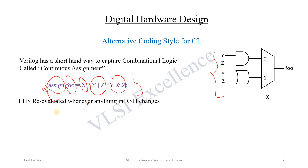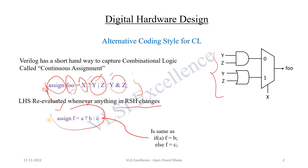The important thing to remember with continuous assignment is that the LHS is re-evaluated whenever anything in the RHS changes. So whenever there is any change in x, y, or z, the assignment statement is going to re-evaluate. For example, if we have 'assign f = a ? b : c', this means: if a equals 1 then f takes the value of b, else f takes the value of c. The first value b corresponds to the true condition of a, and the second value c corresponds to the false condition.